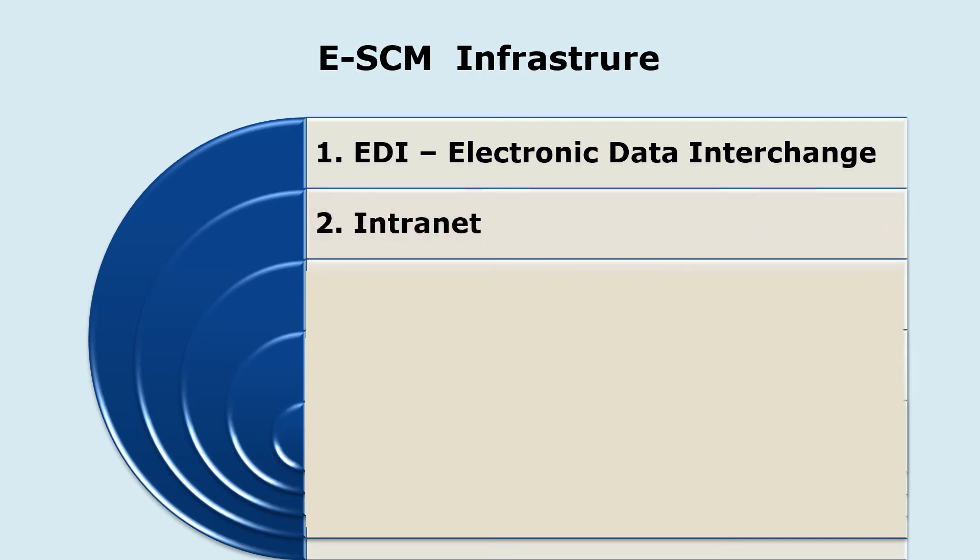The next infrastructure component is the intranet, required for internal communication within the same organization. It is a network of a business organization meant for internal communication and is used within the organization.